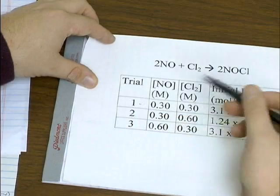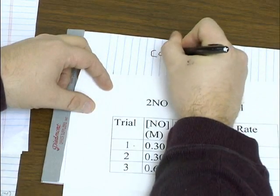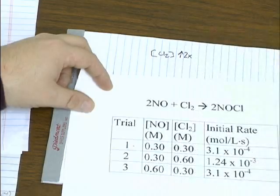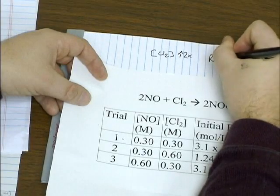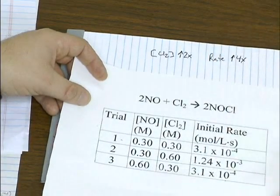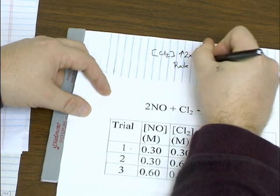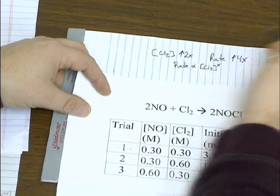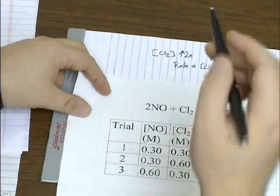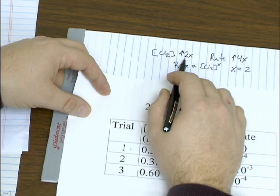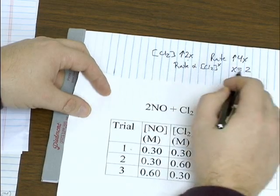So if we compare trials one and two, concentration of NO is held constant, concentration of chlorine is doubled. And if you divide these two, it looks like the rate is increasing by a factor of four. So if the rate is proportional to chlorine raised to some exponent X, it looks like here that X is equal to two. Because the factor that you change the concentration gives you a rate that is the square of that amount. Two goes up four.